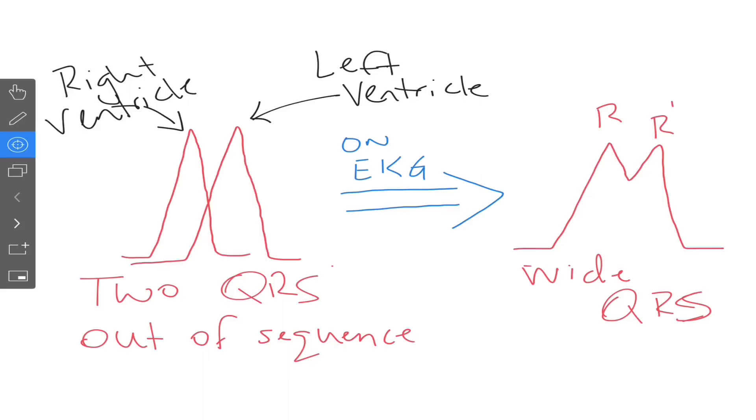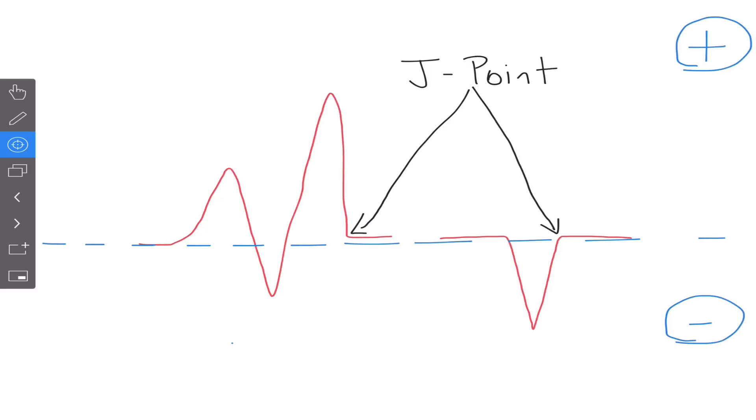So the one thing we're mainly looking for is the deflection before the J point. And the J point sits right here. It's this area before a deflection either up like this one shows or down like this one shows. So with a right bundle branch block, you're going to almost always have a positive deflection just before the J point.